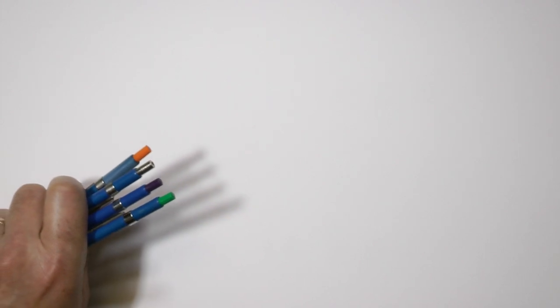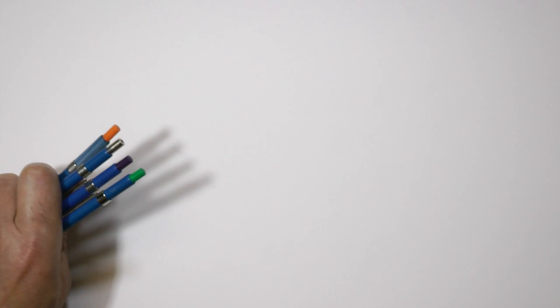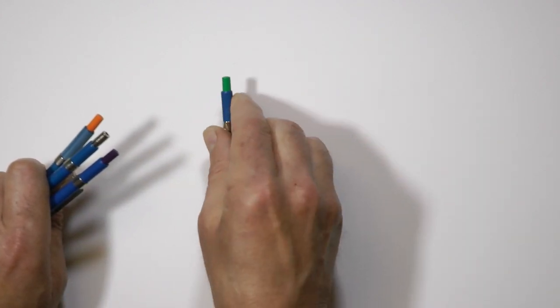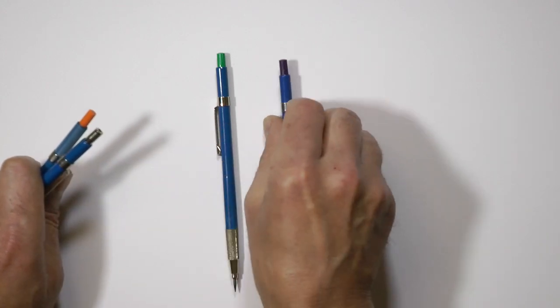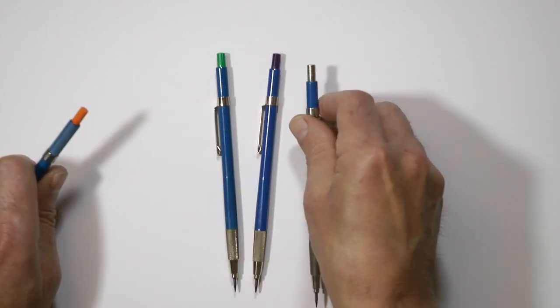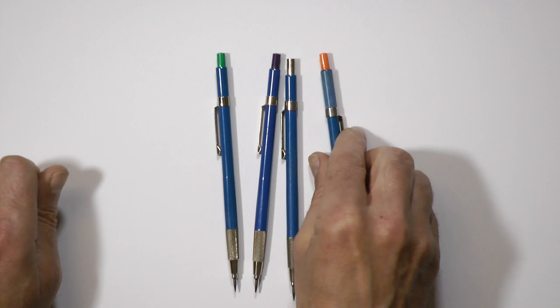My Staedtler clutch pencils, for example, have color-coded caps. I hold them in my free hand while I'm working and I can pick out any grade instantly. This is the F, this is the 2B, this is the HB, and this is the 8H.